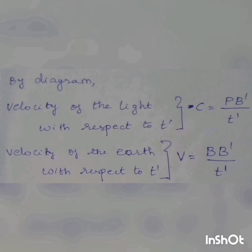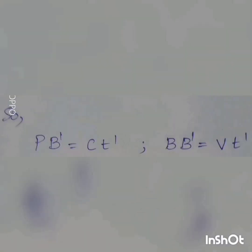Let's take a look at the velocity of light with respect to t. That's why we can change the velocity of light with respect to t. c equals pb-dash by t. Now if you look at the diagram you can see the diagram. So we will have a conclusion: pb-dash which is c·t-dash, and v·t-dash is our conclusion. That is an equation.